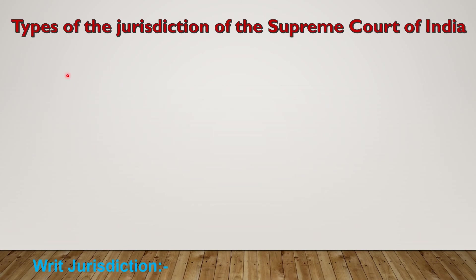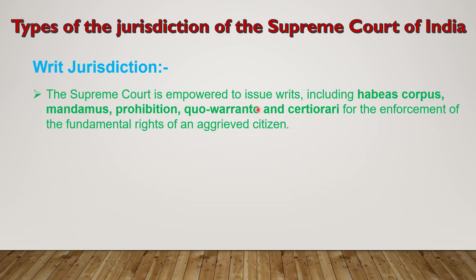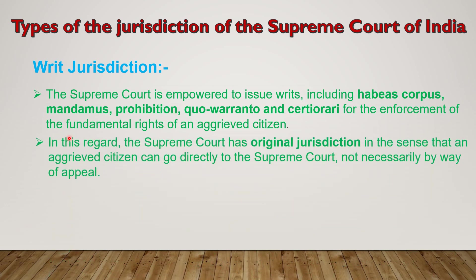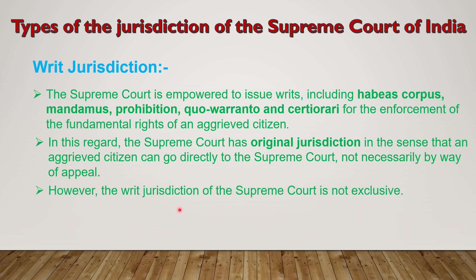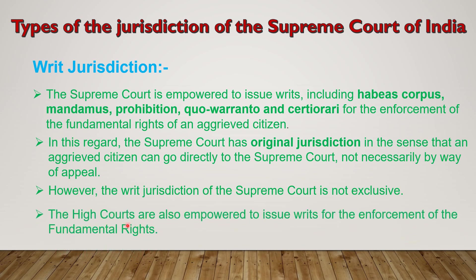The Supreme Court is also empowered to issue writs including habeas corpus, mandamus, prohibition, quo warranto, and certiorari. These are the types of writs for the enforcement of the fundamental rights of an aggrieved citizen — they are issued whenever the fundamental right of a citizen is violated. In this regard, the Supreme Court has original jurisdiction in the sense that an aggrieved citizen can go directly to the Supreme Court, not necessarily by way of appeal. However, the writ jurisdiction of the Supreme Court is not exclusive — the High Courts are also empowered to issue writs for the enforcement of fundamental rights.